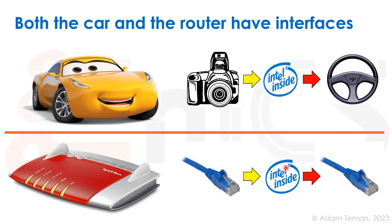Both systems use interfaces. On a car, those are things like sensors that bring data in and actuators that take data out. The other type is communication interfaces that can both transmit and receive on the input and output.